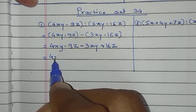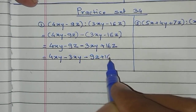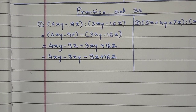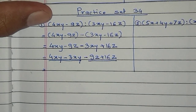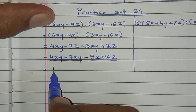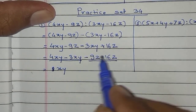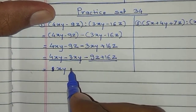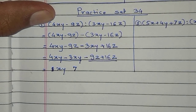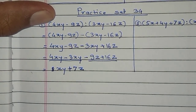Now write the like terms together: 4xy and minus 3xy together, then minus 9z and plus 16z together. Now write the answers of these like terms — that will be our final answer. 4 minus 3 gives 1xy. Even if you don't write the 1, it still works because the meaning of xy is 1 only. Then minus 9 plus 16: we take the difference of 9 and 16 — 9 plus 7 equals 16 — the sign of the bigger number is plus, and the variable is z. So plus 7z is the final answer.